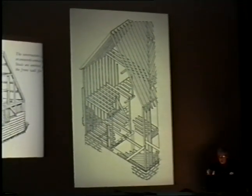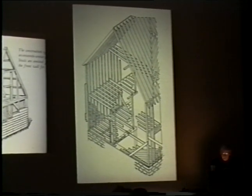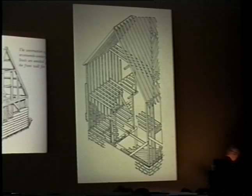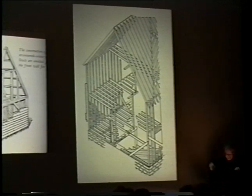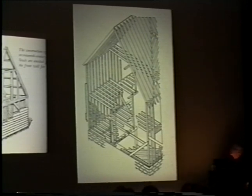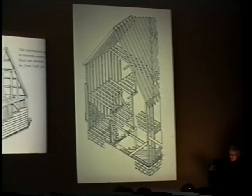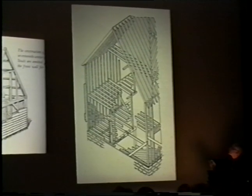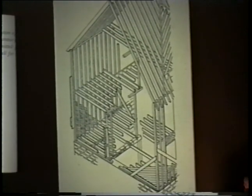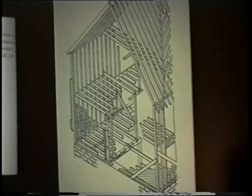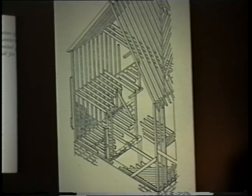In the balloon frame, there's a larger number of smaller wooden members — generally two-by-fours, boards that are two inches by four inches. In the 19th century, they really were two inches by four inches; today they're somewhat smaller. Two-by-sixes or two-by-eights are used for floor beams and roof rafters. And in the balloon frame, they're connected exclusively with nails — none of the fancy joinery techniques.